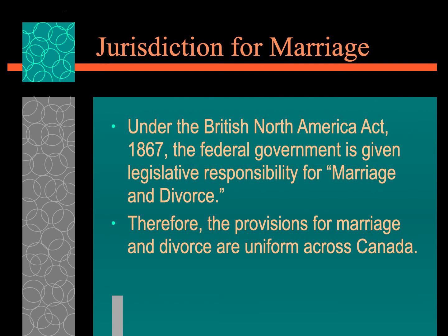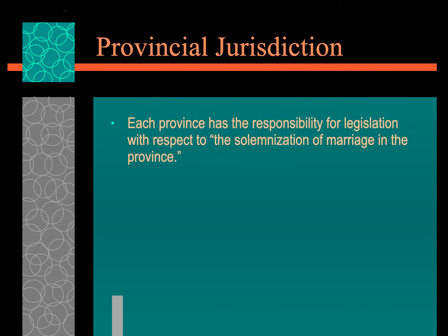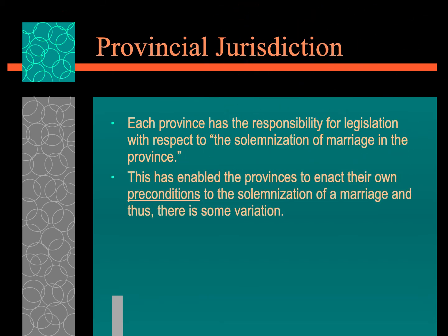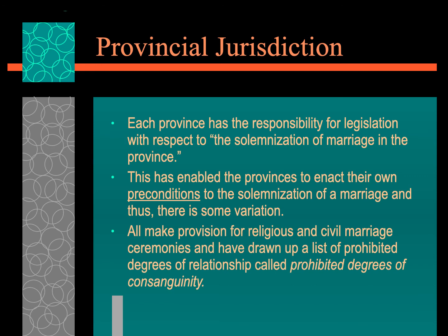Under the British North America Act of 1867, the federal government was given legislative responsibility for marriage and divorce. Going back to the founding of the Dominion of Canada, all provisions regarding marriage and divorce are federal, so they are the same right across the country with no difference from province to province. However, each province has responsibility for the solemnization of marriage in that province, and provinces can enact their own preconditions to solemnization, allowing for some variation, including religious and civil marriage ceremonies and various financial considerations.